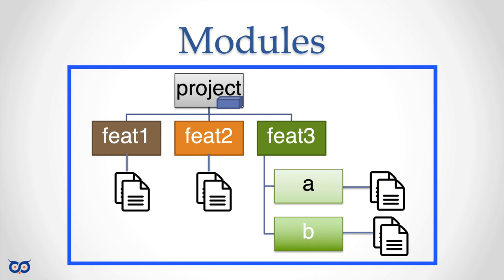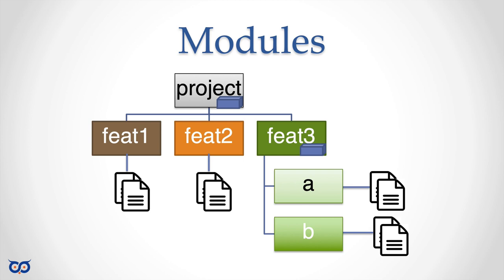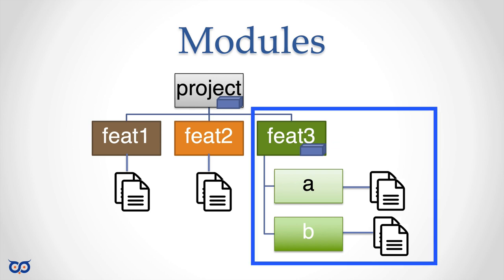We can use directories to mirror the structure of our program — a directory to represent our project, and within that, directories for our different feature packages. If we have a module file saying our project is a module, all the code inside the project will be versioned according to the rules in that module file. Because modules are so flexible, we can choose that feature three should have its own module file, and the rules there apply to all files in feature three and its children packages.